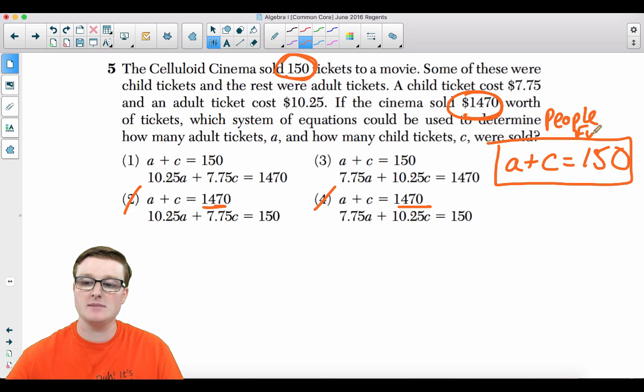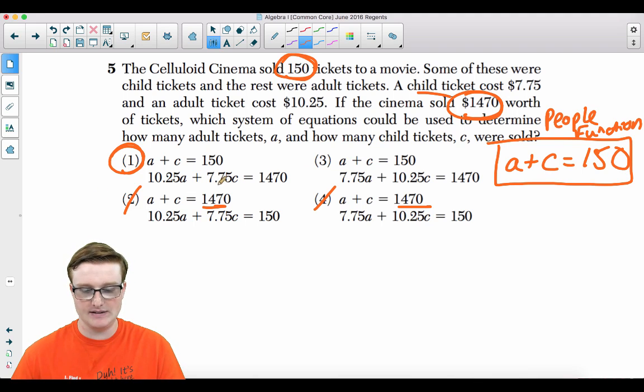Choices two and four make no sense because that 1470 is money. This is the people function. The people function means how many people did you sell the tickets to? 150 people. Now we just need to look at the money function. $7.75 for a child ticket. So child is represented by C. The answer is going to be choice one because that's $7.75 times C and $10.25 times A, that's the adults. And that equals an amount of $1,470.